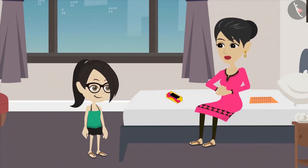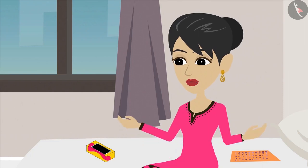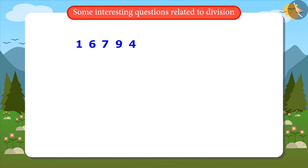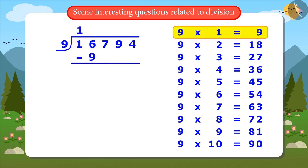Mother confirms Vandana is correct, and Vandana says she can easily tell the answer. She writes 16,794 and 9 in division format and starts dividing by 9. The first digit is 1, which cannot be divided by 9 alone, so she divides 16 by 9. Since 9 ones are 9, she writes 1 in the quotient, and the remainder left is 7.